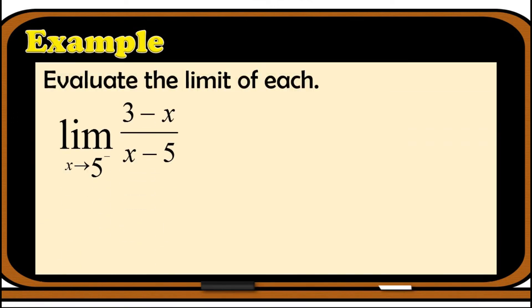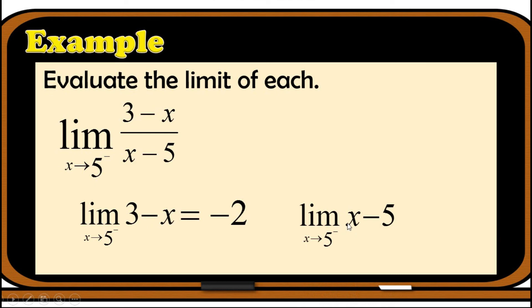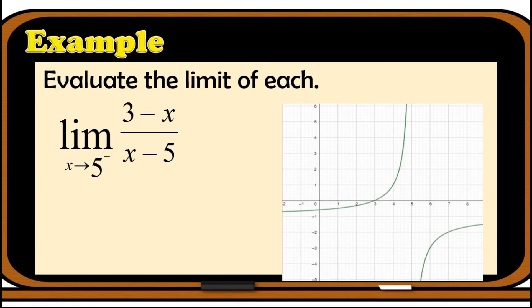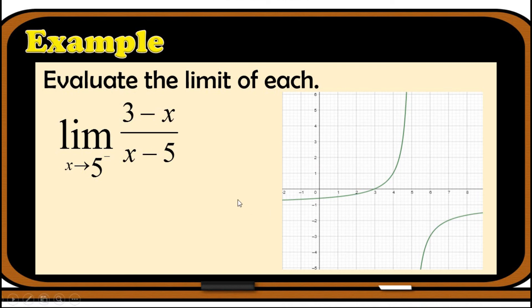Another example: find the limit of (3 minus x) over (x minus 5) as x approaches 5 from the left. The limit of the numerator by substitution: 3 minus 5 equals negative 2. The limit of the denominator: 5 minus 5 equals 0. So we have negative 2 over 0. Since the numerator is negative and we approach 5 from the left, negative over negative gives positive infinity. The graph confirms — approaching 5 from the left, the graph moves upward continuously.